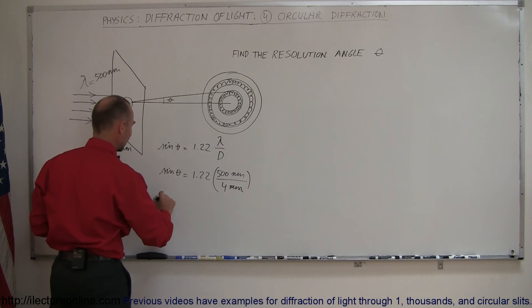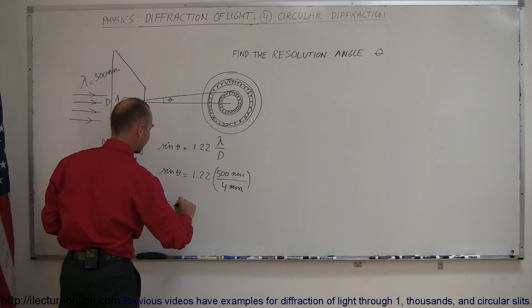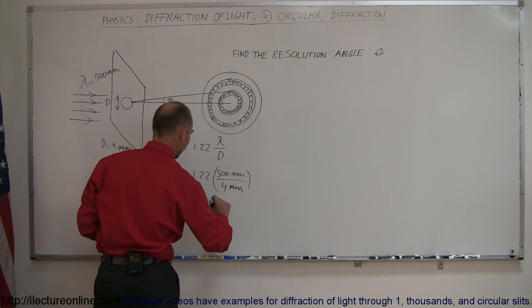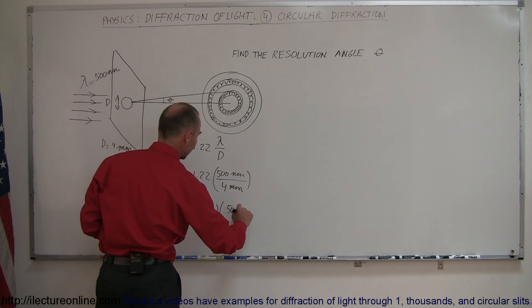And theta would then be the arc sine of that, so it would be 1.22 times the ratio of 500 times 10 to the minus 9 meters divided by 4 times 10 to the minus 3 meters.